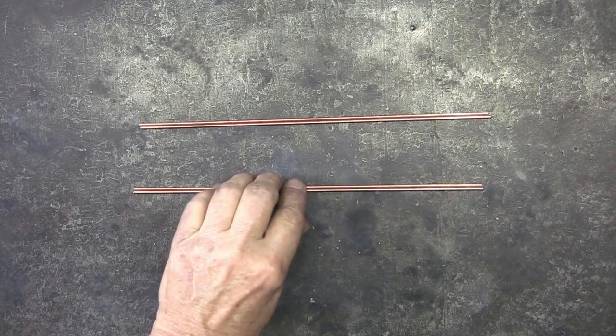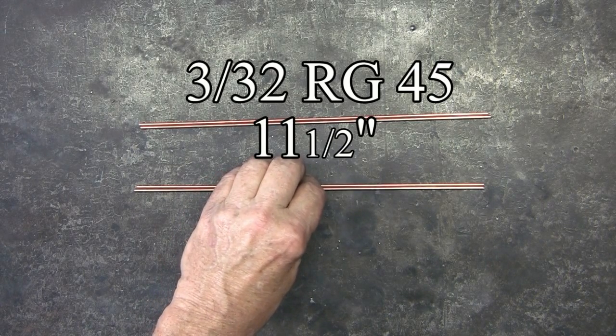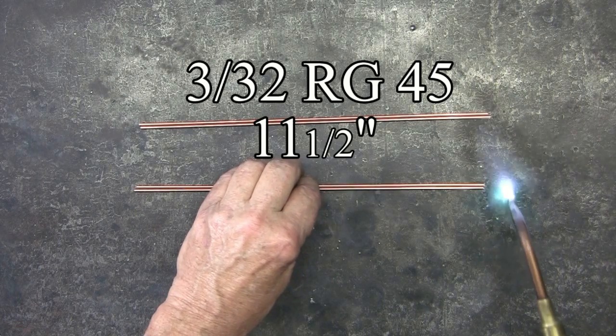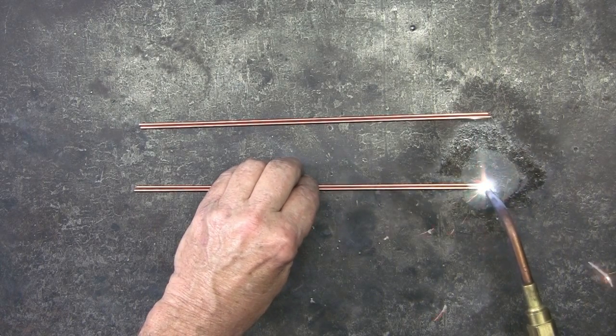To begin, I'm using four pieces of 3/32nd RG45. These are 11.5 inches long. Now, I'm fuse-welding the ends of each set of rods together.